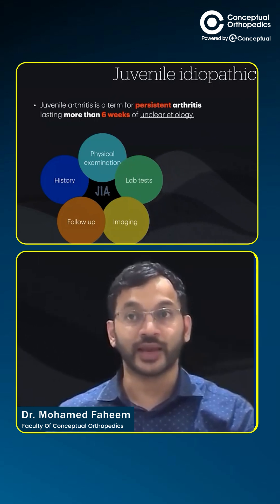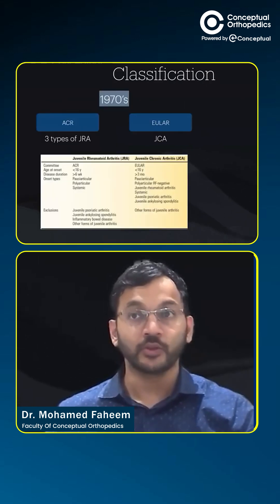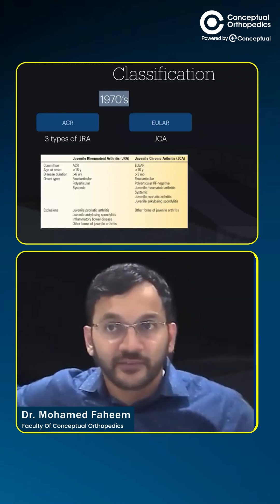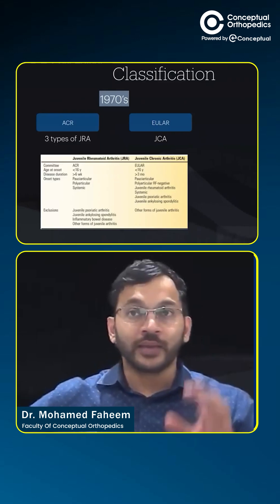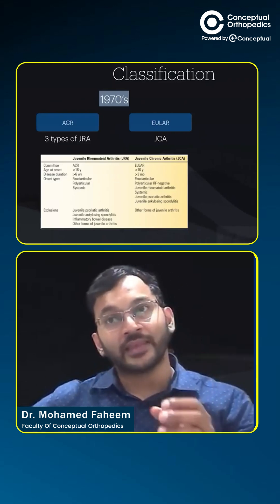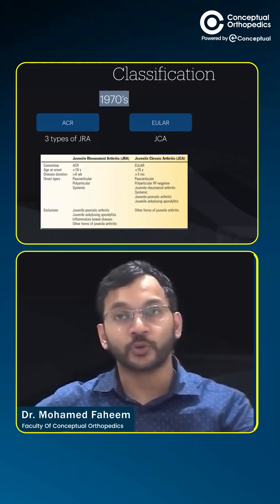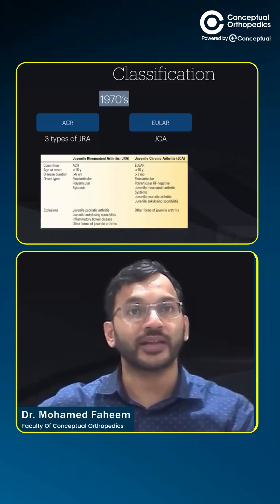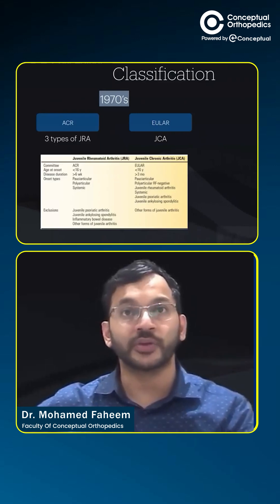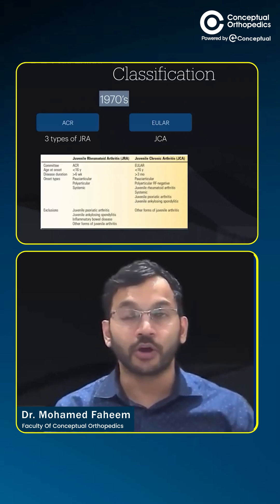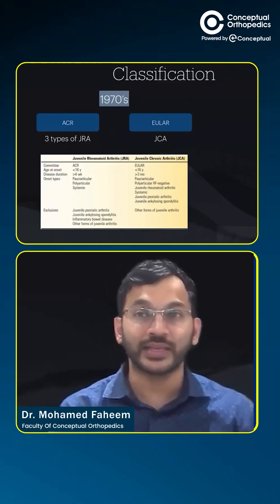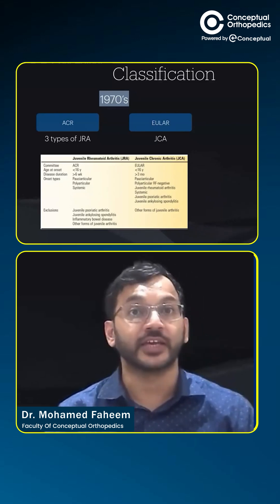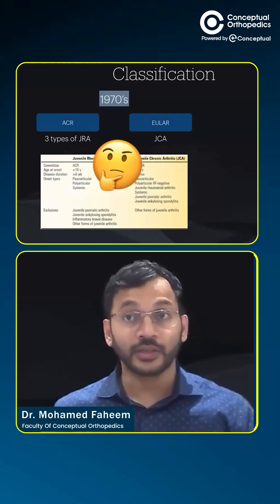The confusion comes with the definition of JIA. According to the American College of Rheumatologists and the European League Against Rheumatism, in the 1970s they had different definitions — they used to call it either JRA or Juvenile Chronic Arthritis. This led to a lot of confusion, as they had different diagnostic criteria and different classifications.